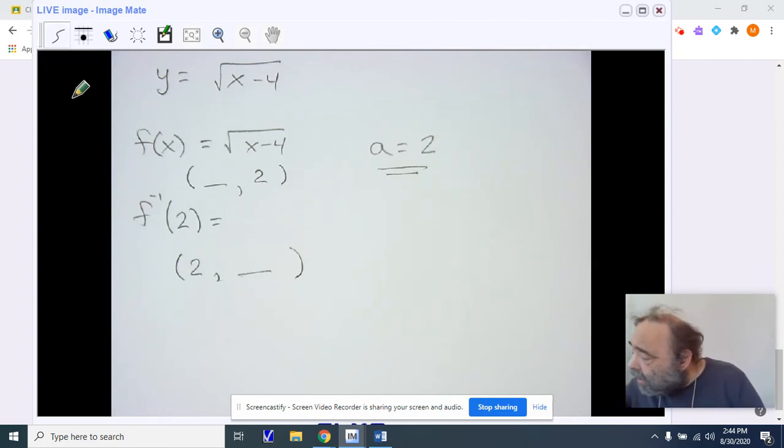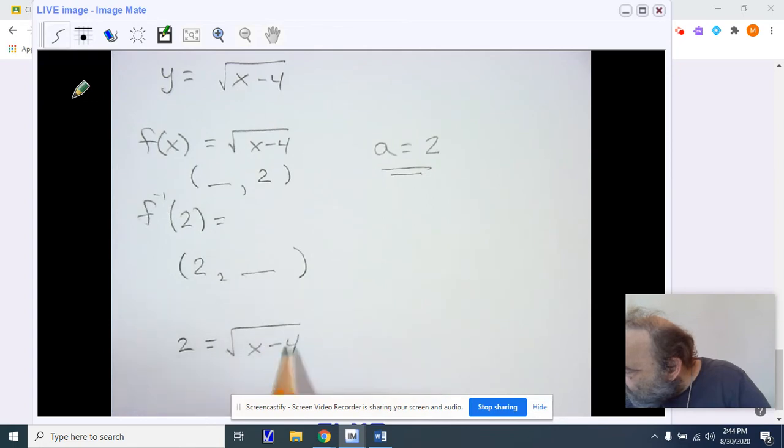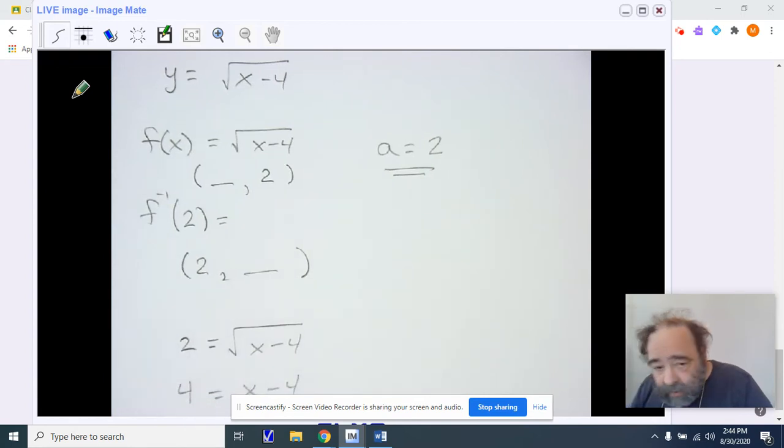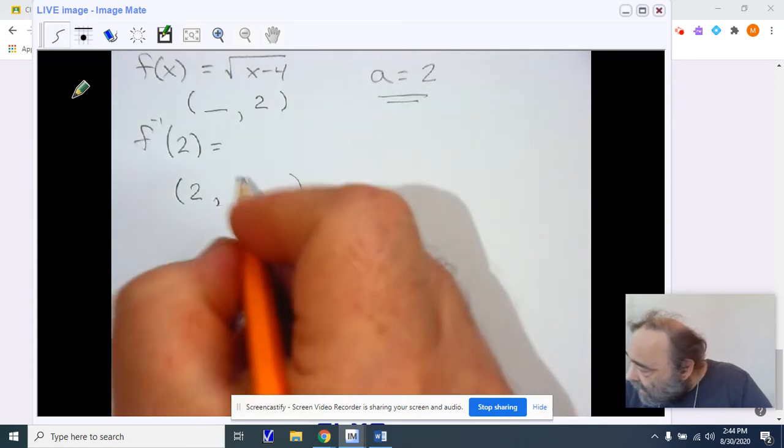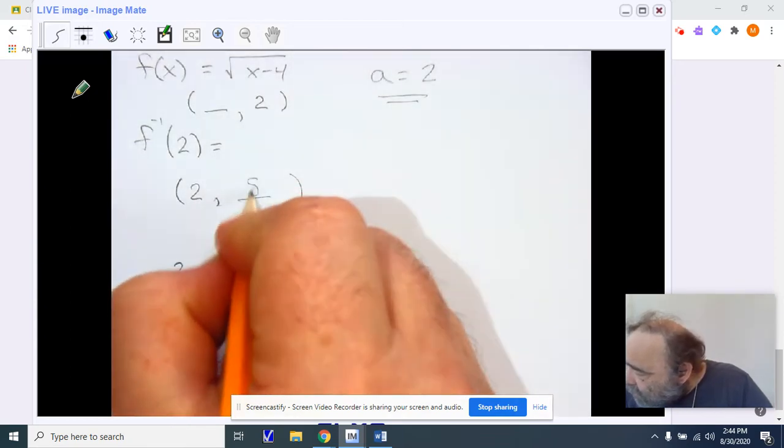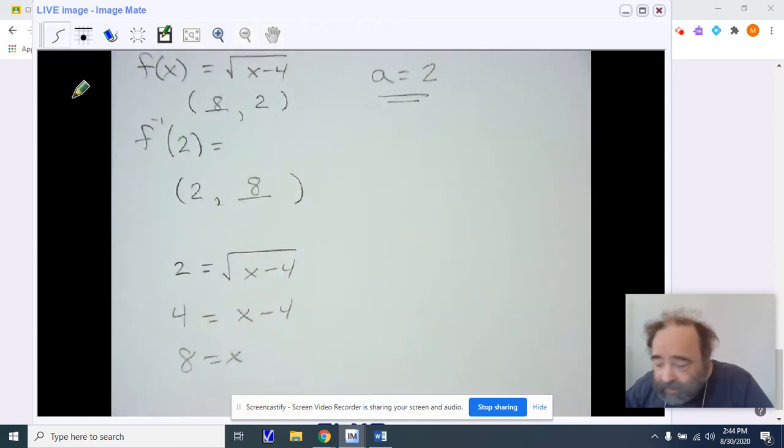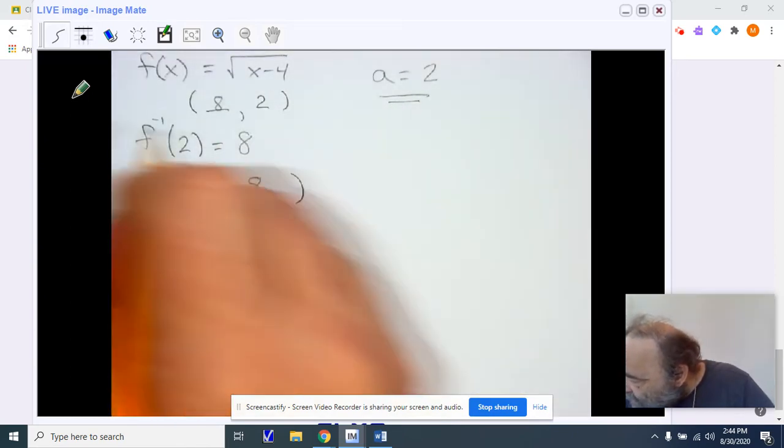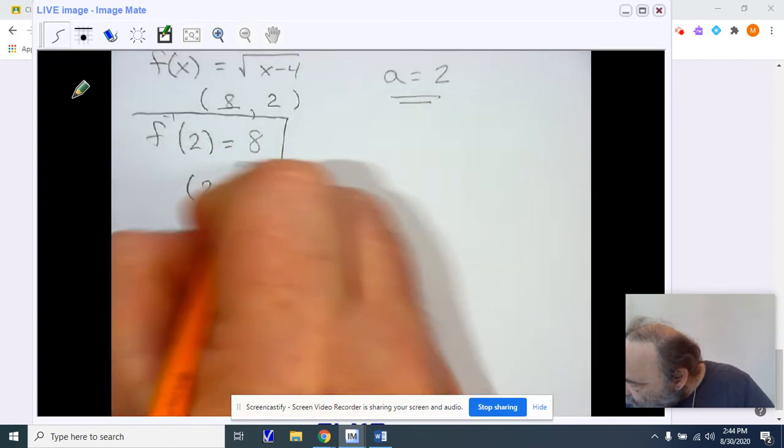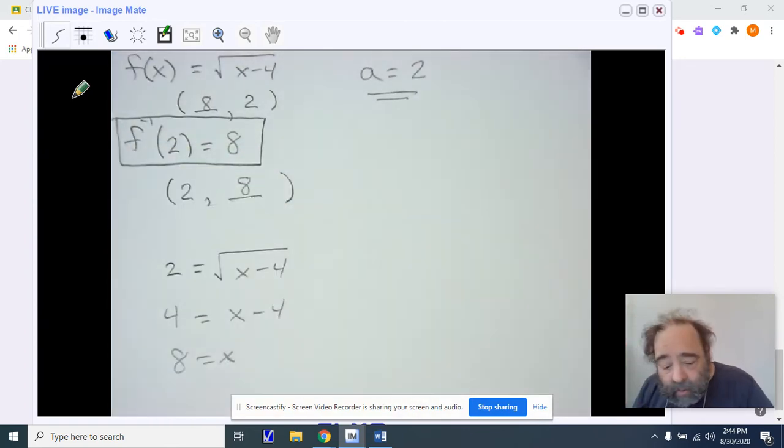So let's just take a look. If 2 is equal to our square root of x minus 4, then we should be able to square both sides and then add 4. Notice 8 is the value of x that gave us 2. And because of that, we know our answer for our inverse at 2 is 8. That's our goal.